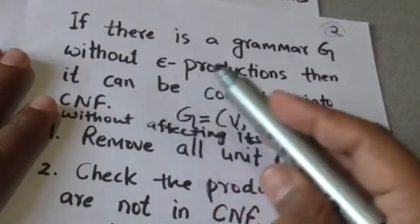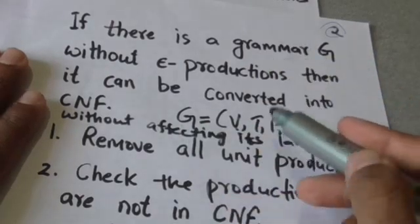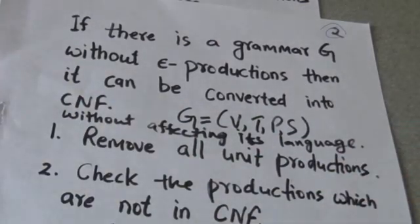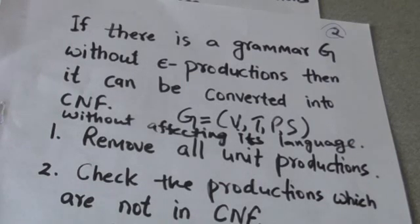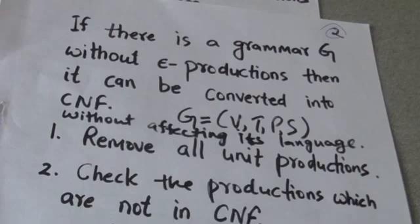Now suppose there is a grammar G without empty productions. This grammar G can be converted into Chomsky Normal Form without affecting its language. Suppose grammar G is defined by the quadruple (V, T, P, S), where V is the set of variables, T is the set of terminals, P is the set of productions, and S is the start symbol. This grammar G doesn't have any empty production.